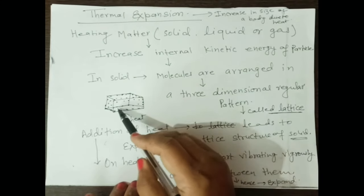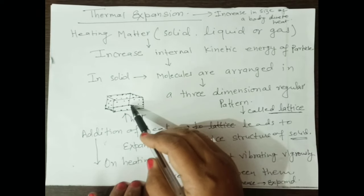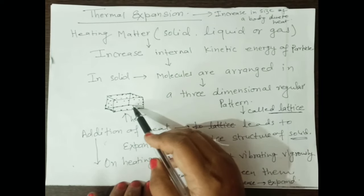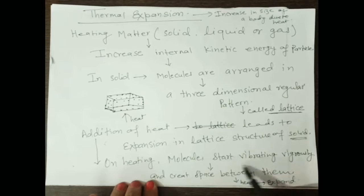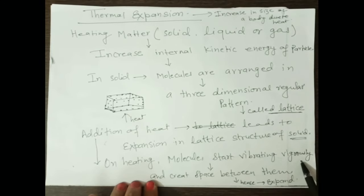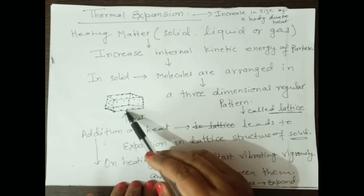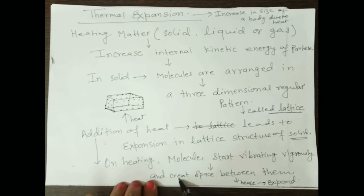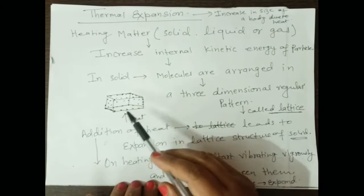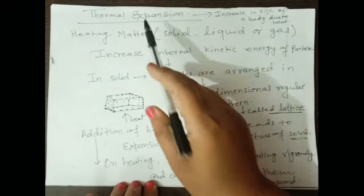On heating, the particles in a solid are very close to each other with no space in between, and their intermolecular force of attraction is very strong. When heated, the particles start vibrating vigorously at their mean position. This vibration disturbs the attraction between molecules and creates some space between the particles, causing the size of the lattice — that is, the solid structure — to increase. This is termed thermal expansion.